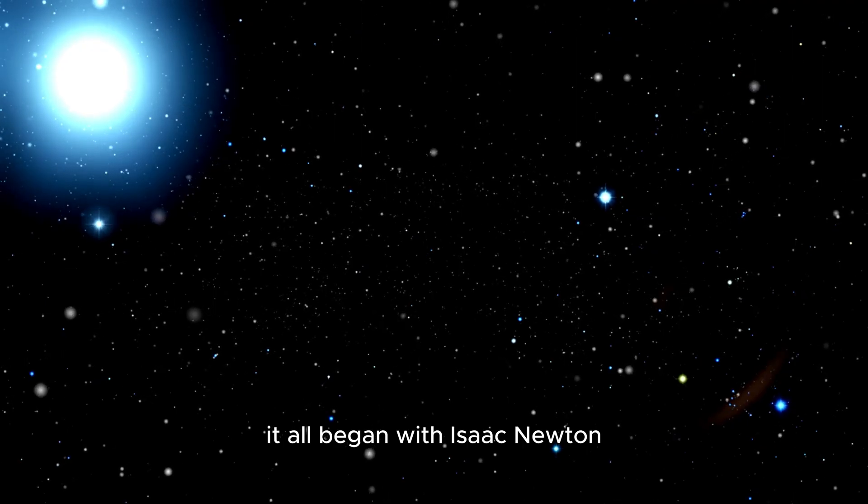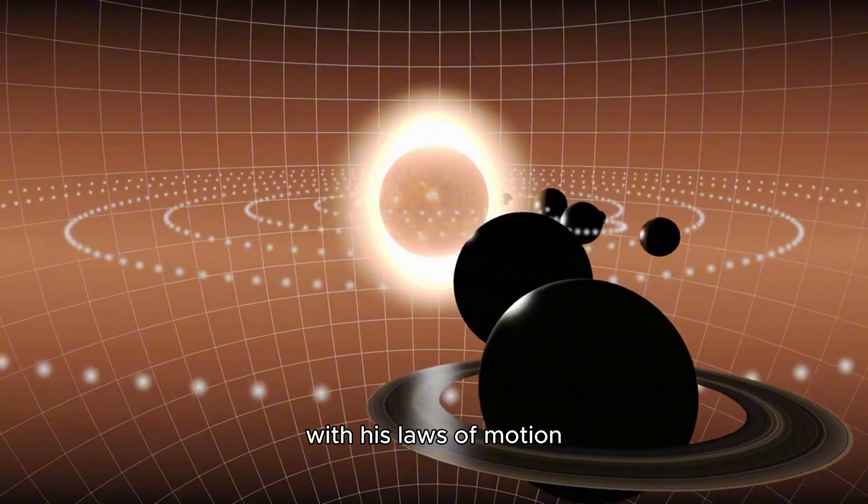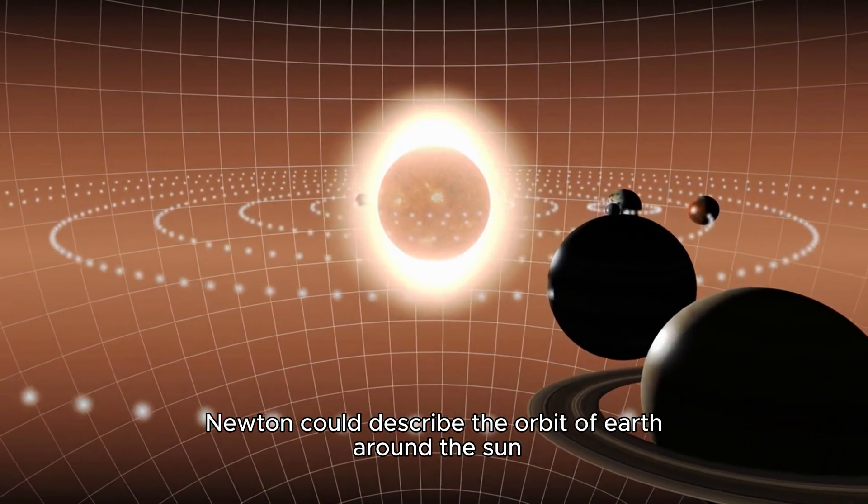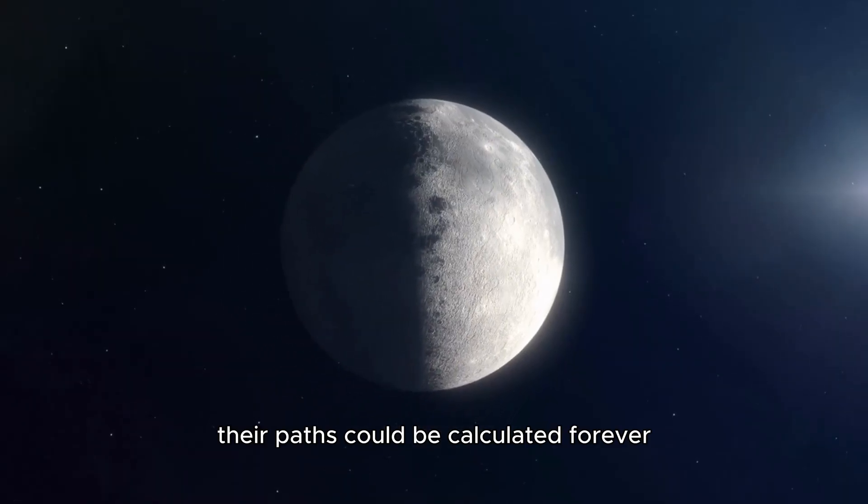It all began with Isaac Newton, the man who discovered gravity. With his laws of motion, Newton could describe the orbit of Earth around the sun perfectly. Two bodies? Easy. Their paths could be calculated forever.